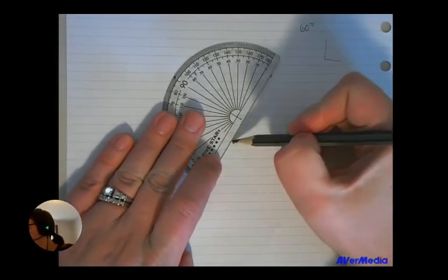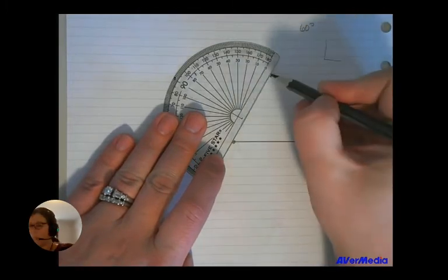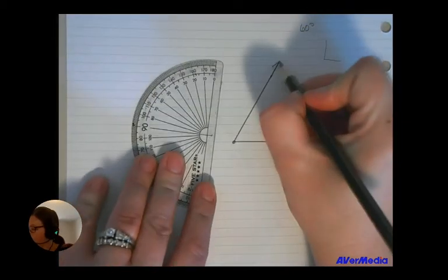So I'm going to draw a line that connects that dot I made for my vertex with that dash I made at that first 60. And I connect them. I draw an arrow at the end.